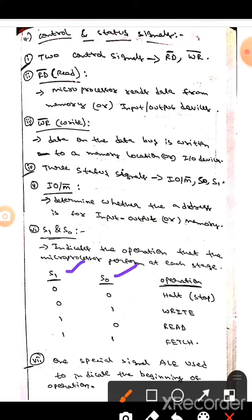If S1 is 0 and S0 equals to 0, then the operation will be halt. Whereas S1 equals to 0 and S0 equals to 1, the operation will be write.